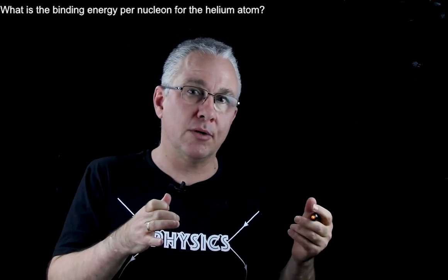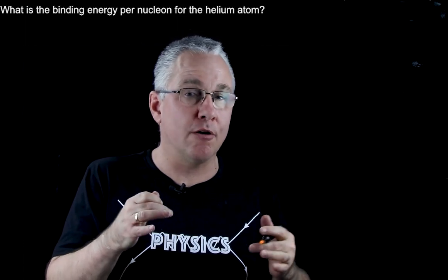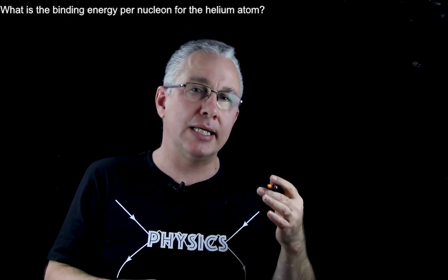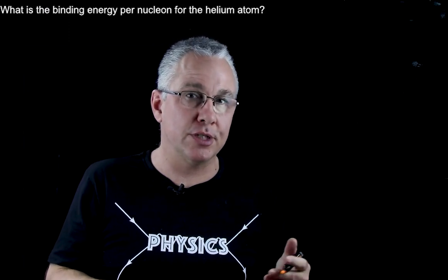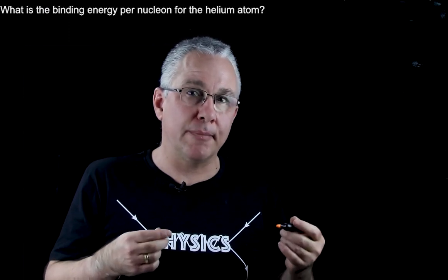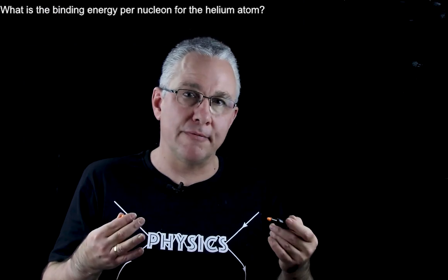So what we need to do is work out what the masses of both our alpha particle and also our protons and neutrons are. Now I'm going to be using atomic mass units because that makes life a little bit easier.